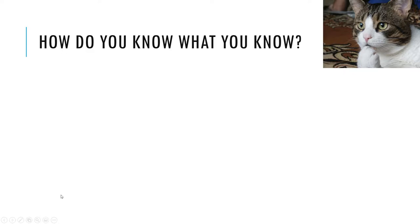How do you know what you know? Take a minute to ponder some of what you know and how you acquired that knowledge. Perhaps you know that you should make your bed in the morning because your mother or father told you this is what you should do. Perhaps you know that swans are white because all the swans you've seen are white, or perhaps you know that your friend is lying to you because she's acting strange and won't look you in the eye. But should we trust knowledge from these sources? The methods of acquiring knowledge can be broken down into five categories, each with its own strengths and weaknesses.